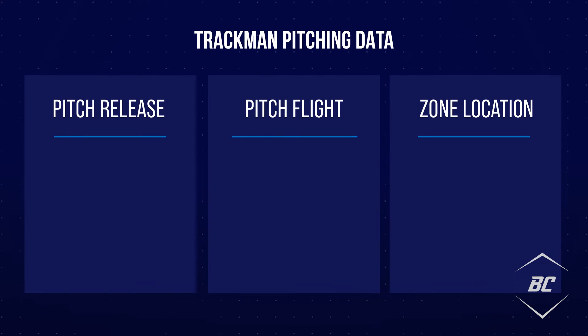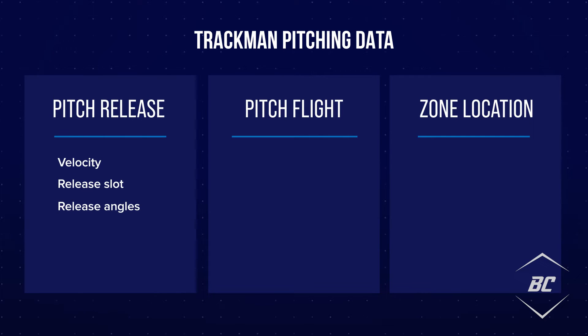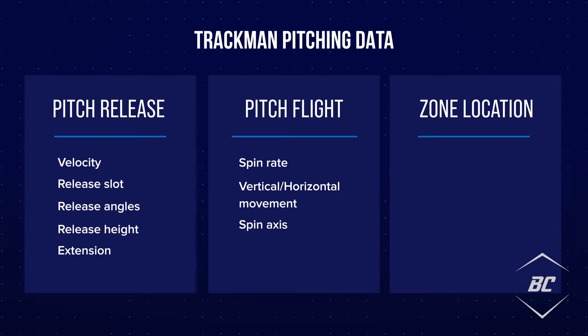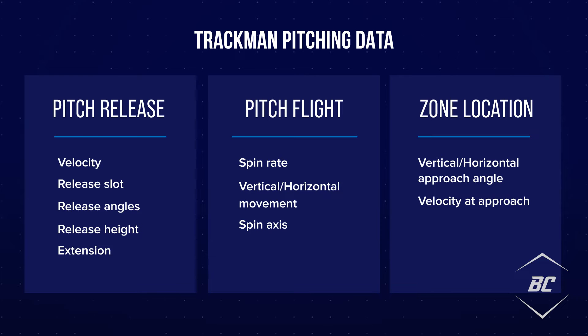Pitchers can use Trackman data to analyze their pitch arsenal, use data in real time to drive pitch design, and measure progress throughout the year. Pitch release metrics can include velocity, release slot, release angles, height, and extension. Pitch flight metrics include spin rate, vertical and horizontal movement, and spin axis. Zone location metrics include vertical and horizontal approach angle, velocity at plate, plate height, and location.